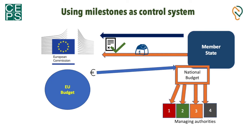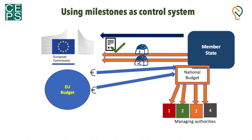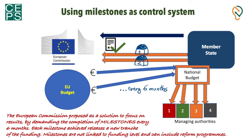This will then be repeated again every six months: after the next milestone is reported, if it has been achieved, the Commission will finance another tranche, and so forth. In a nutshell, the European Commission proposed a solution to focus on results by demanding the completion of milestones. Every six months, each milestone achieved releases new tranches of funding, and milestones are not linked to a specific funding level and can include reform programs.